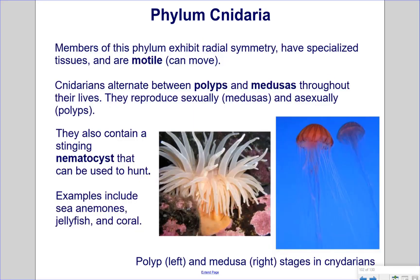Phylum Cnidaria. Members of this phylum exhibit radial symmetry, have specialized tissues, and are motile, meaning that they can move. Cnidarians alternate between polyps and medusas throughout their lives. They reproduce sexually as medusas and asexually as polyps. They also contain stinging nematocysts that can be used to hunt. Examples include sea anemones, jellyfish, and coral.